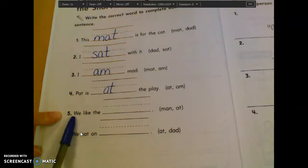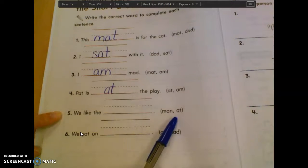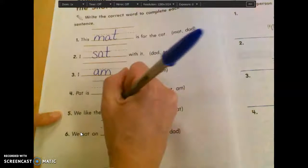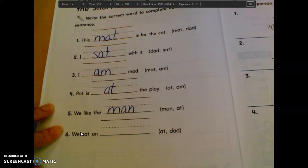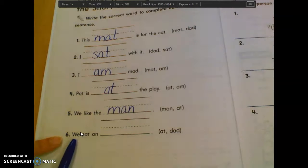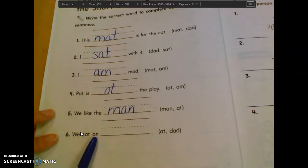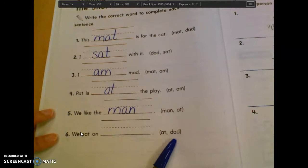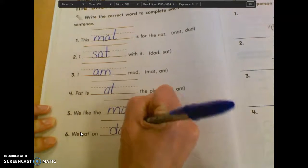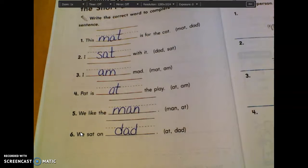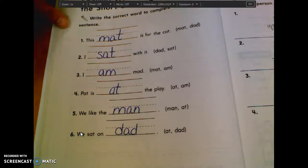Number five says, we like the blank, man or at? Logan, man, we like the man, very nice, man. And number six, can someone read that one for us with the word that should go in there? Christian, go ahead. We have Pat and Dad. Dad, very good, we sat on Dad. Aw, poor Dad.